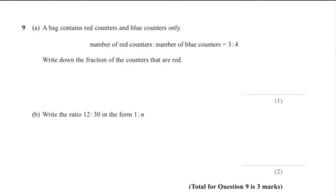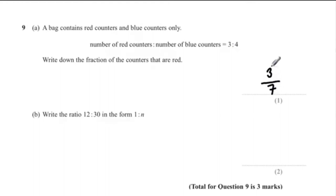Question 9A: a bag contains red and blue counters only. The ratio of red to blue is 3 to 4. Write down the fraction of counters that are red. The red counters are 3, which is the numerator. The total parts are 3 plus 4 equals 7, so the final answer is 3 over 7.